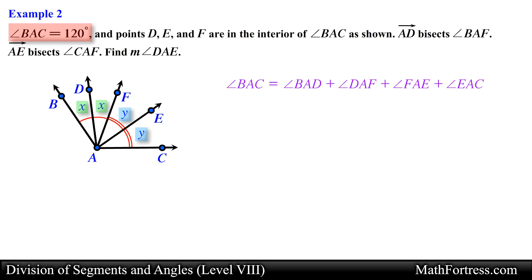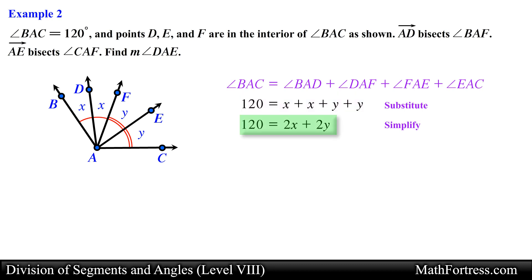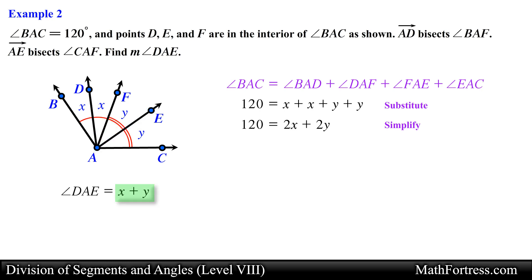We can now substitute these variables and the measurement of angle BAC into the geometric relation representing the sum of all the angles to obtain the following expression. Adding like terms we simplify the equation. Notice that we have an expression in terms of two variables x and y. Before generating another equation, let's find an expression for angle DAE. Notice that angle DAE equals the sum of angle DAF and angle FAE, or in terms of our variables, x plus y. So if we can determine what x plus y equals, we have our answer.